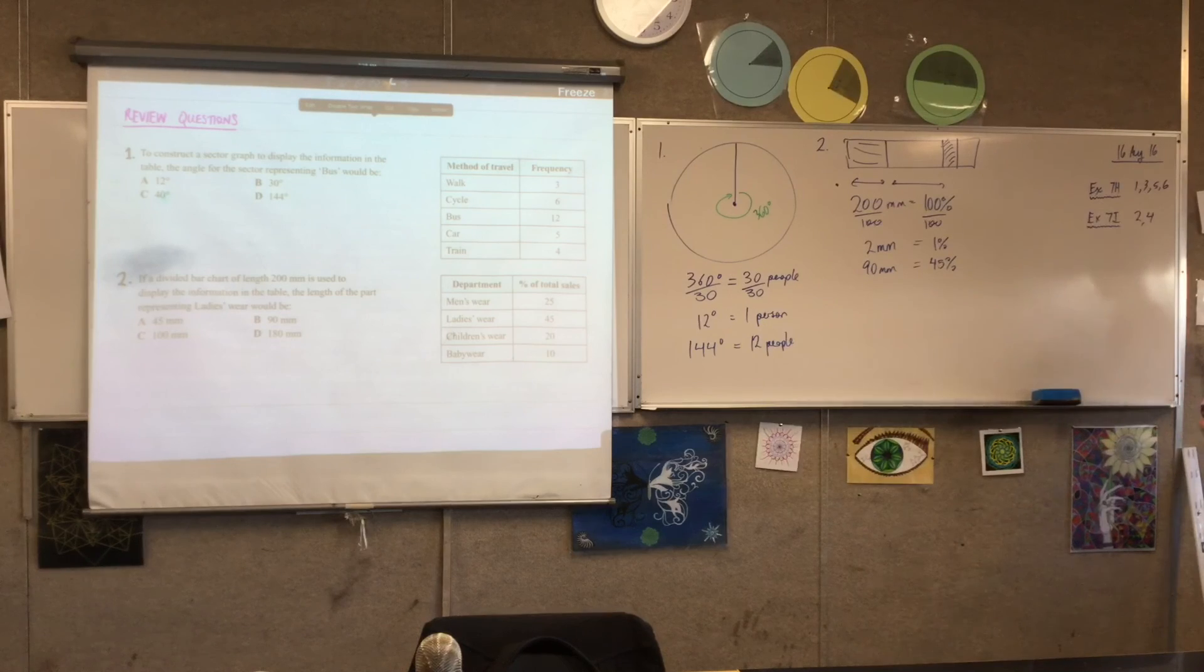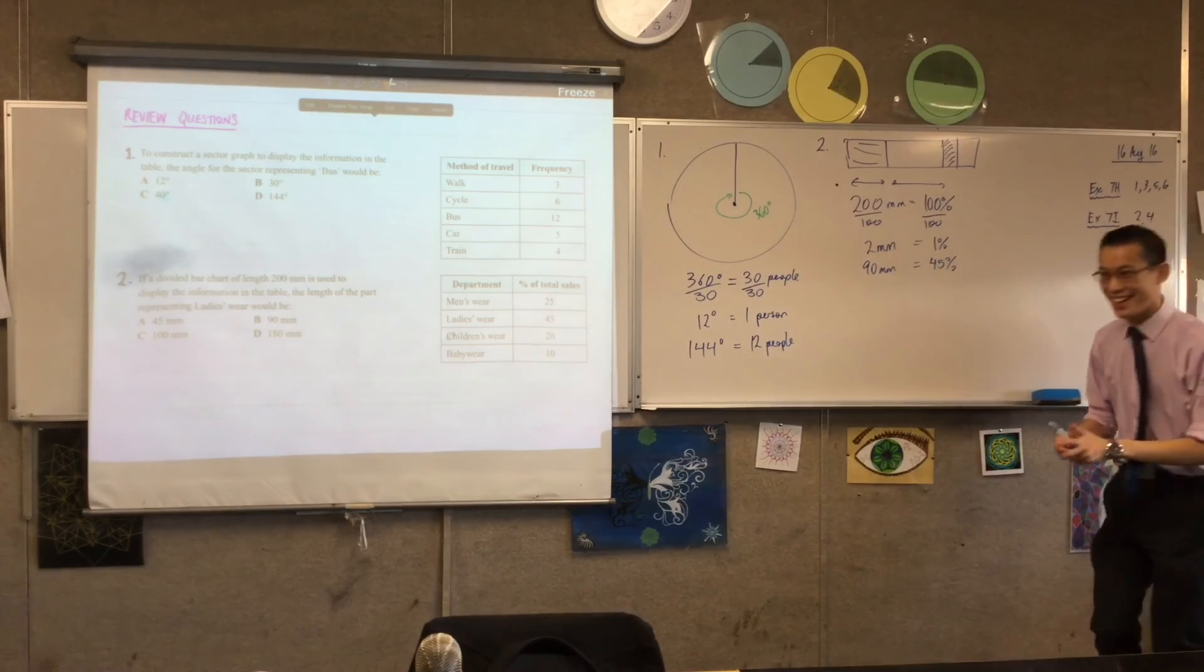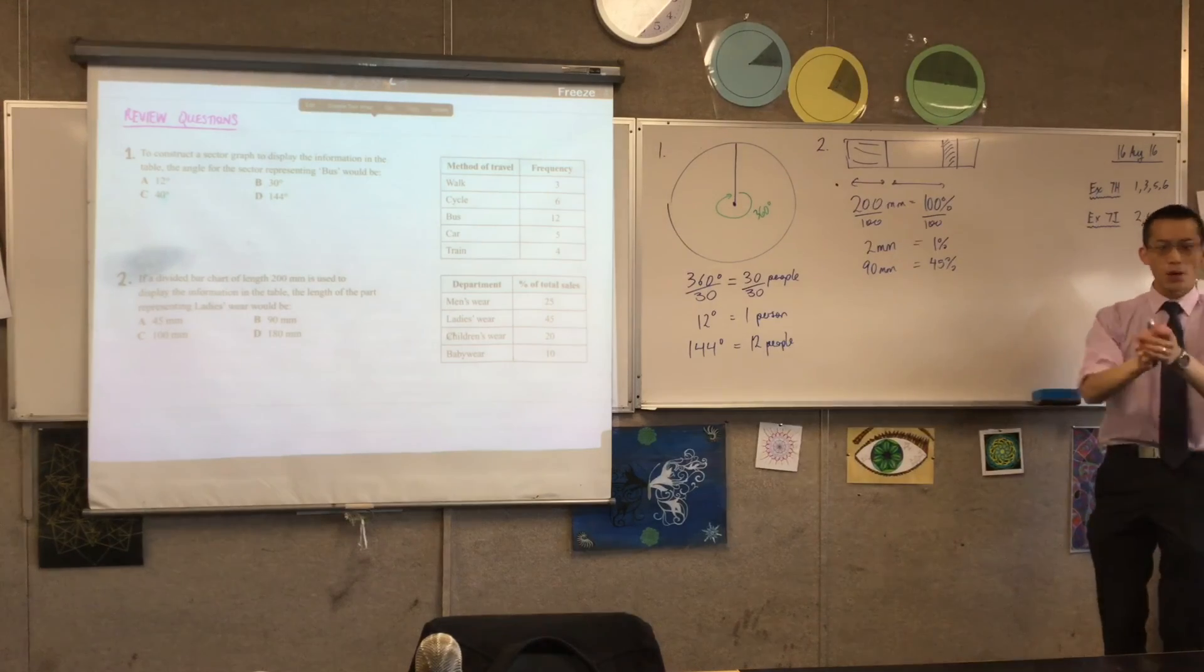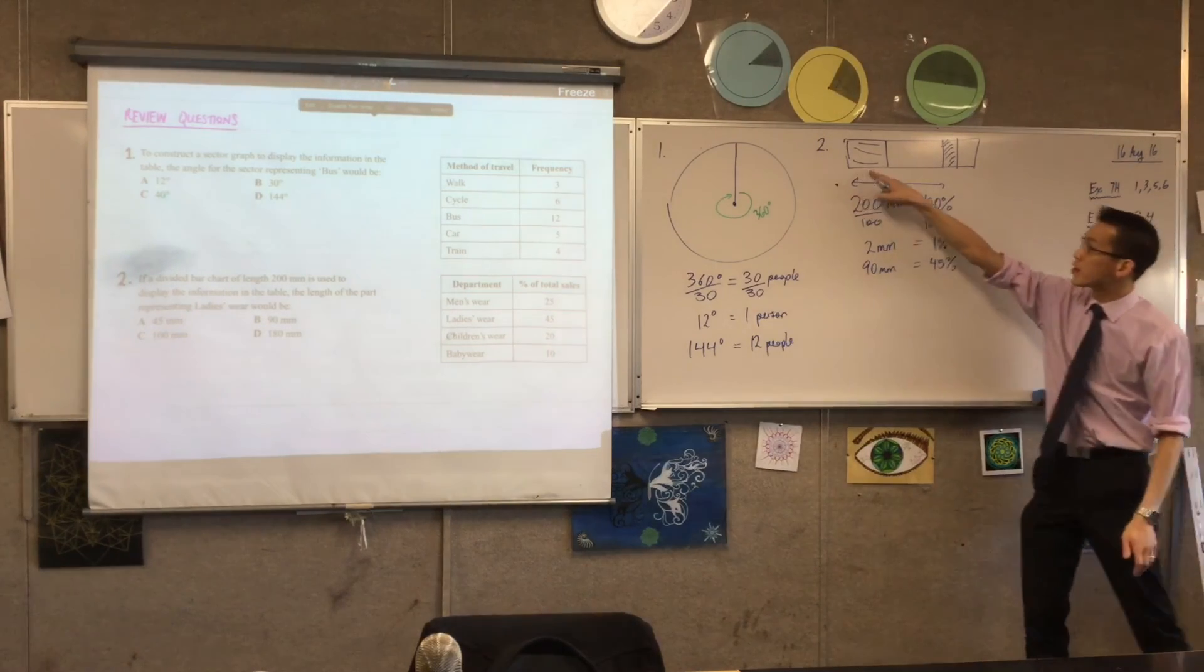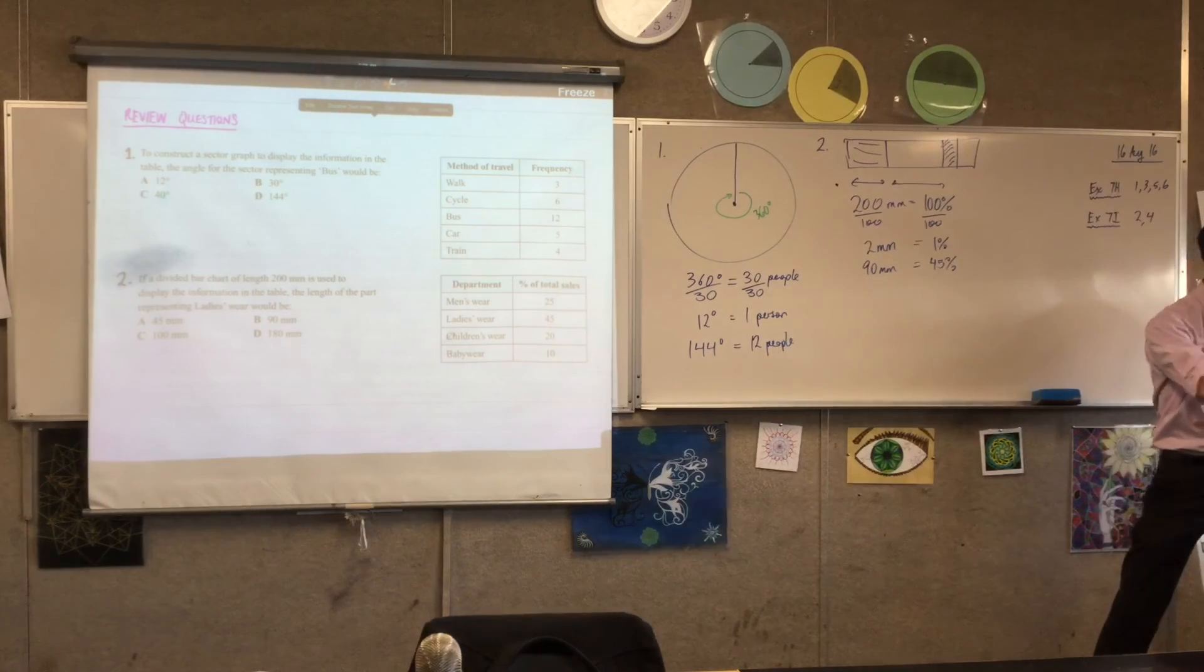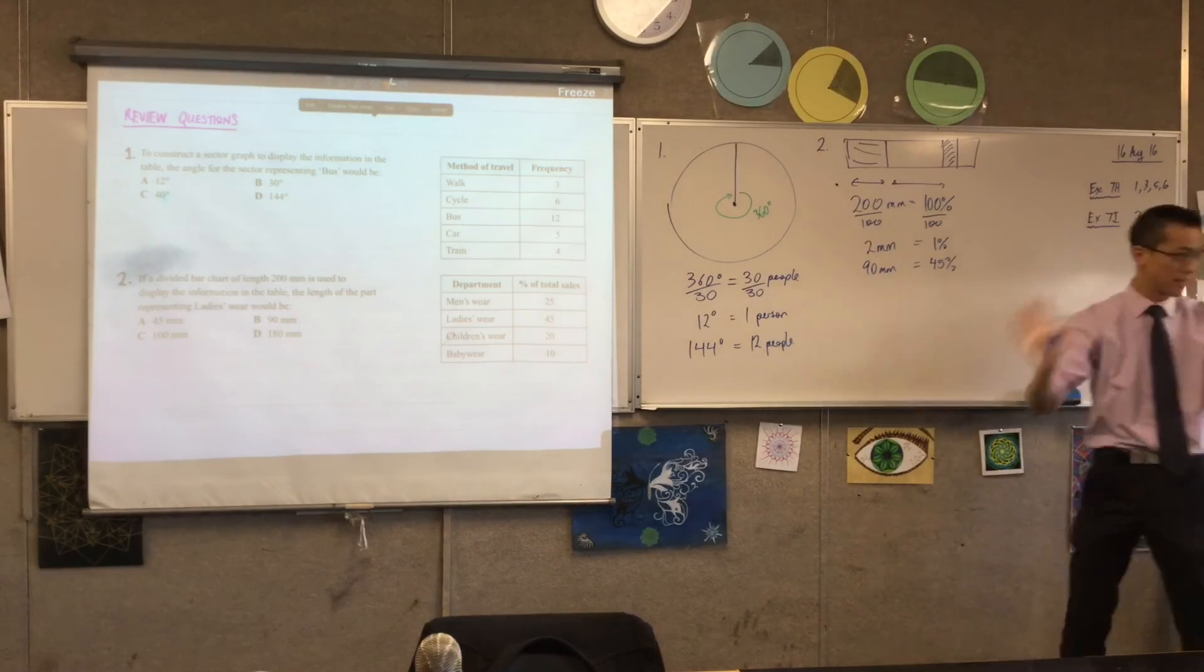What do you think? Make sense? Happy? Yeah. Cool. Yeah? So, as in now, presumably what I would do is I would go ahead, I would draw my thing out, I'd make sure that this is 20 centimetres long, and then I'd mark off my 9 centimetres, and that would be my ladies wear sales, etc. Okay.